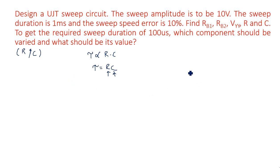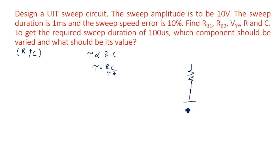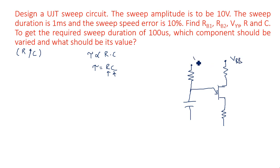We already know the circuit diagram of the UJT sweep circuit or relaxation oscillator. Here we have a capacitor, resistor, and capacitor. From here we have the UJT — unijunction transistor — with resistors RB2 at base 2 connected to VBB, and RB1 at base 1 connected to ground. The charging components R and C are also shown.